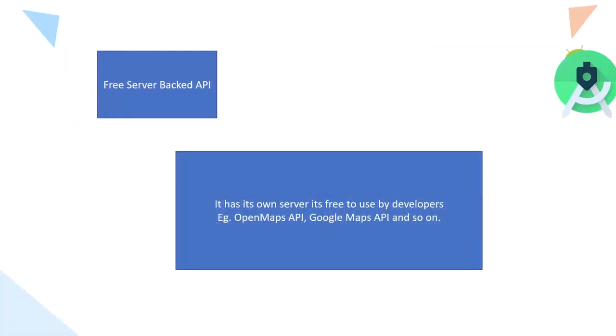A free server-backed API is something that has its own servers and provides those servers for free to developers. A common example is the Google Maps API. All Android developers can use Google Maps API for free. You just have to send your GPS location from your phone to the Google server, and the Google server loads a real-time map based on that input. If you're plotting directions from one place to another, the Google Maps API not only handles the direction — it saves the speed at which you are traveling, calculates the estimated time of arrival, and also processes the number of distinctions in traffic zones from your source to the destination. That is a classic example of a free server-backed API.